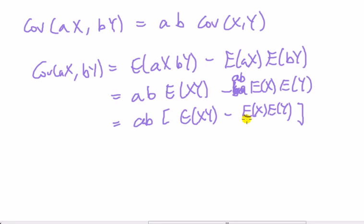Okay, and we are done, aren't we? So if I were using my previous notation, that's mu x, this is mu y. Okay, so this is a, b, and this whole thing is by the definition covariance of x and y.